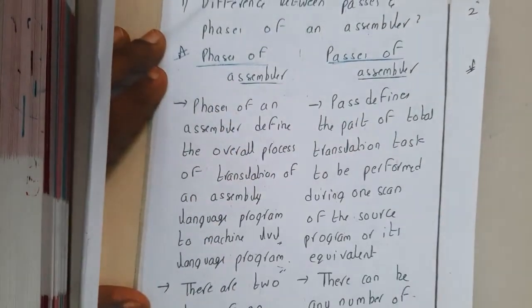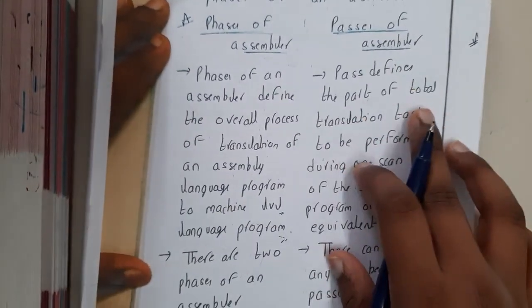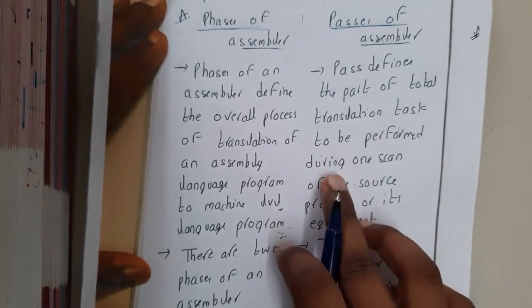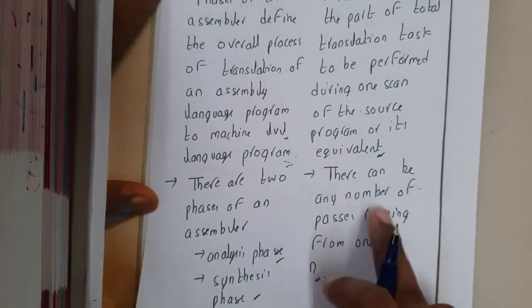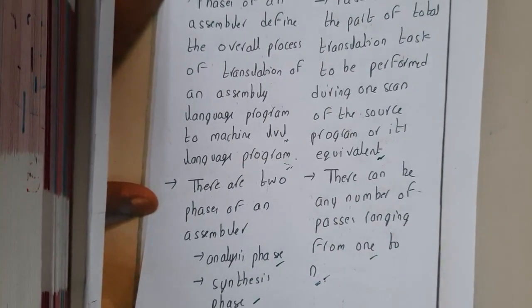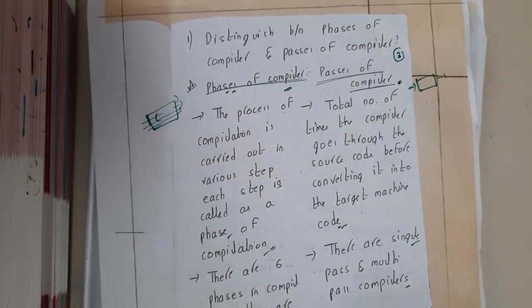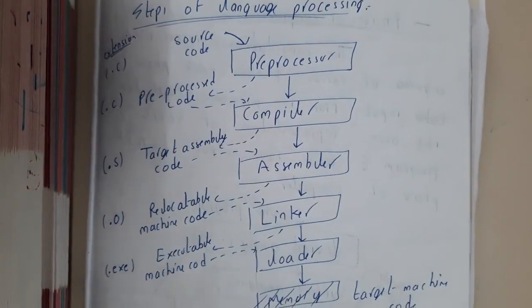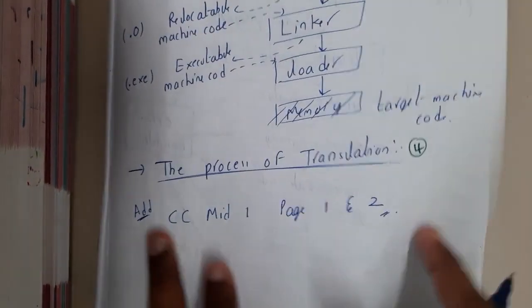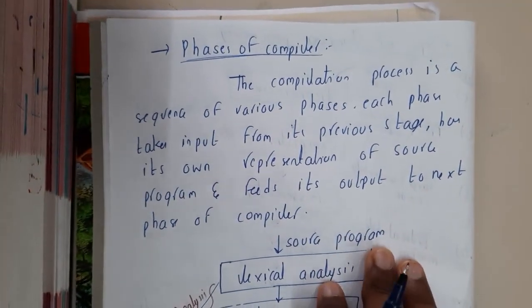Similarly for passes: the pass defines the part of the total translation task to be performed during one scan of the source program and its equivalents. There can be any number of passes, that is one to n. In the next lecture, we'll be discussing the process of translation, which is nothing but the phases of the compiler. Thank you, thanks for watching.